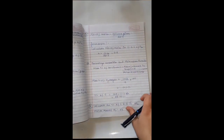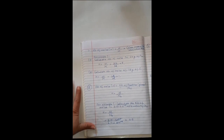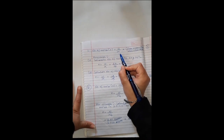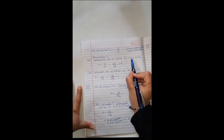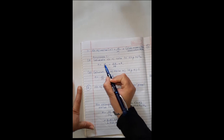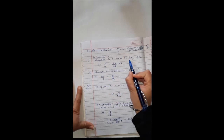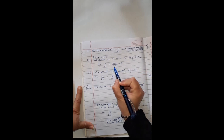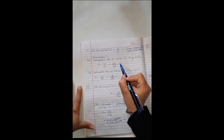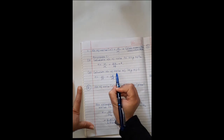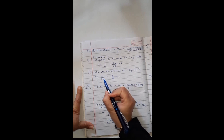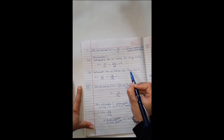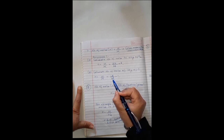First method: if mass is given in the question, the number of moles equals given mass of substance divided by molecular mass. For example, calculate number of moles in 64 grams of oxygen. Number of moles equals 64 divided by 32, which equals 2. Another example: calculate number of moles of 12 grams of carbon. Given mass is 12 and molecular mass of carbon is also 12, so the answer is 1.